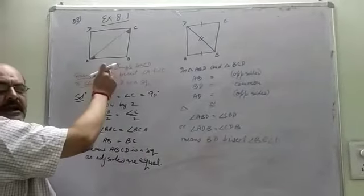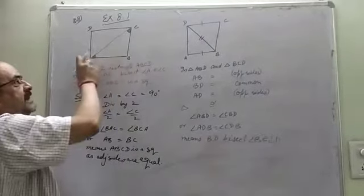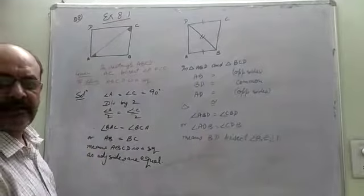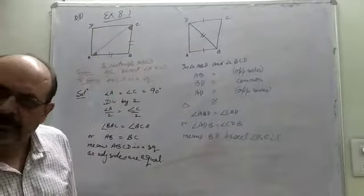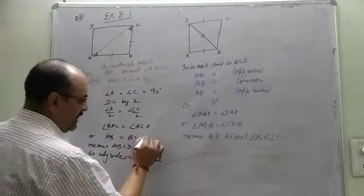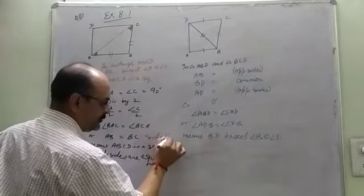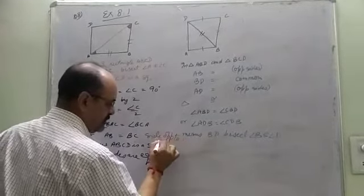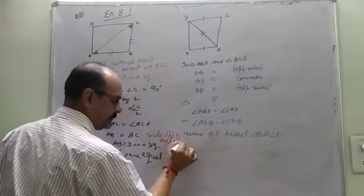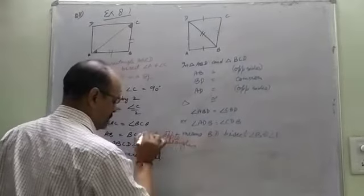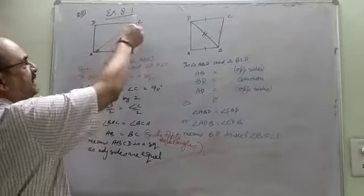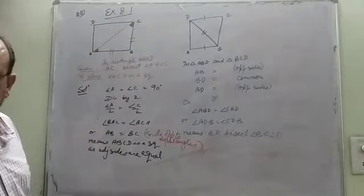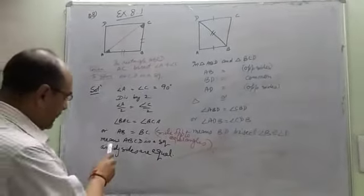BAC and BCA, they will be equal. If they are equal, the side opposite to them will be also equal. Side opposite to equal angles. If this side and this side, they are equal in a rectangle, adjacent sides are equal.